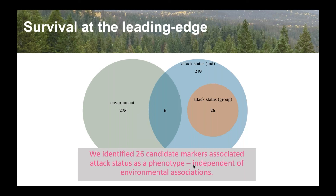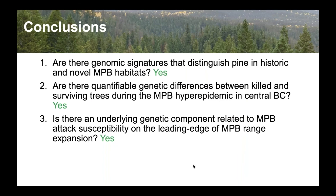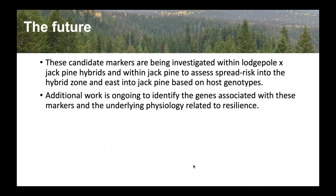There are differences in the genetic components of susceptibility to attack on the leading edge. We're trying to develop methodology and statistics to map these onto the landscape. These candidate markers are being investigated for allele frequencies within the hybrid zone and into jack pine to assess spread risk at the genotype level. We're also doing additional work to identify genes associated with these markers and the underlying physiology by looking at where those SNPs are in transcriptome resources and examining differential expression — and that is promising.